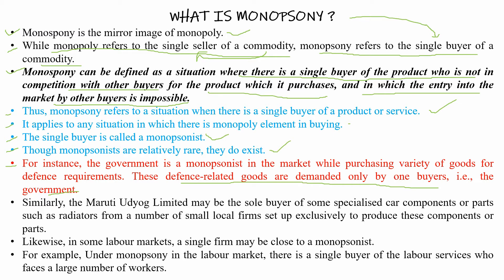The government is a monopsonist for many things, including defense-related and national security goods. For defense-related products, the only buyer is the government, making it a monopsonist. Similarly, Maruti Udyog Limited may be the sole buyer of some specialized car components or parts — such as radiators — from a number of small local firms set up exclusively to produce these components. In monopsony there is a large number of sellers, so many small local firms manufacture specialized car components for Maruti Udyog Limited, while the sole buyer is Maruti Udyog Limited.